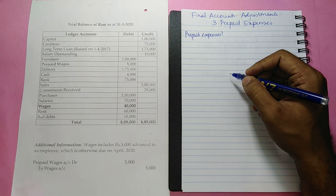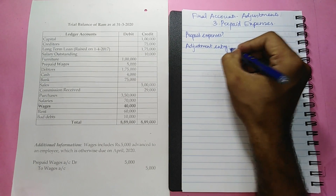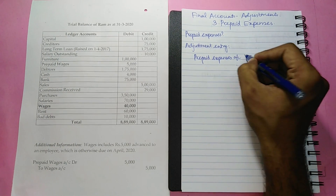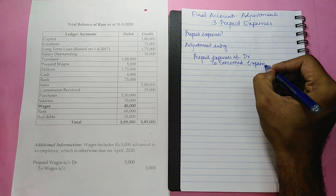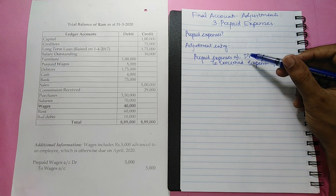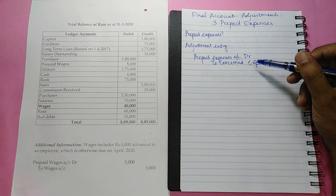The necessary adjustment for prepaid expenses is made by passing the following adjustment entry: Prepaid Expenses Account debit to the concerned expense. The effect of this entry is that the prepaid amount is deducted from the total of the particular expense, and the new prepaid expense account is shown on the asset side of the balance sheet. It is deducted because the expense does not relate to the current accounting period — since it relates to the next period, it is shown as a current asset.